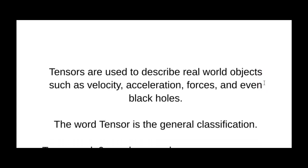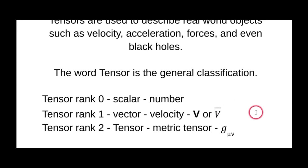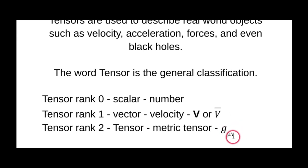The word 'tensor' is a general classification. A tensor of rank zero we call a scalar — it's just a number. A tensor of rank one we call a vector; an example would be velocity, written as bold v or v with a bar. A tensor of rank two we just call a tensor; an example is the metric tensor used widely in general relativity, written as g with subscripts mu and nu. Everything is a tensor — for rank zero and one we just gave them special names because they're used so widely.